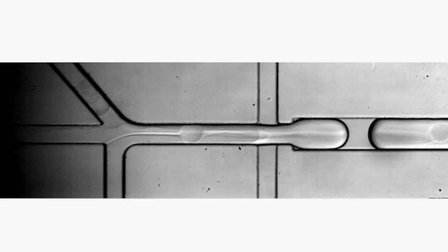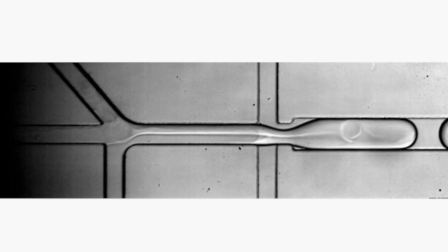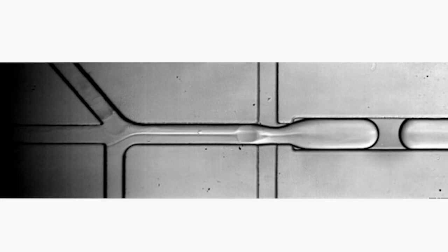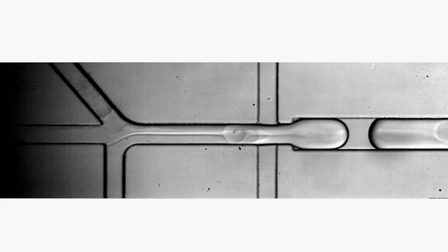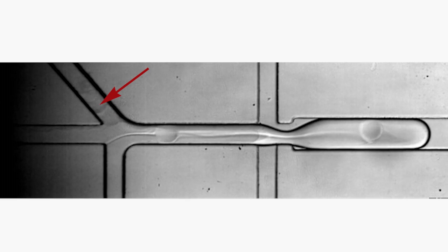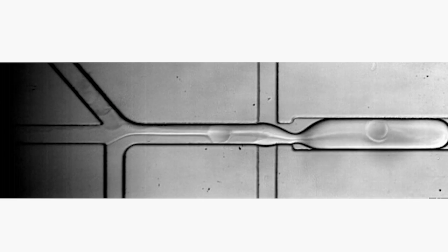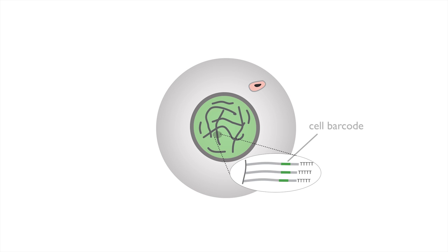What we do while we assemble this droplet — we have three channels. We have a channel which brings the cell in, a channel which brings the chemical reagents that we need to do the analysis, and then we have another channel which puts in a bead, and that bead is the key to this whole process. The approach we came up with was to use hydrogel beads. A single bead will contain primers that can be used for a reverse transcription reaction, which will then barcode the contents of the cell inside the droplet.